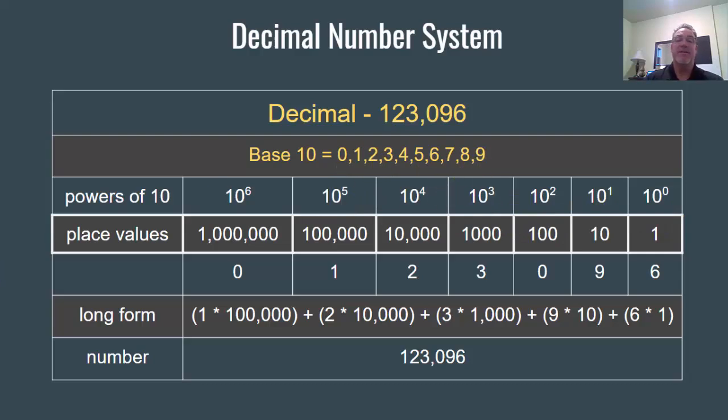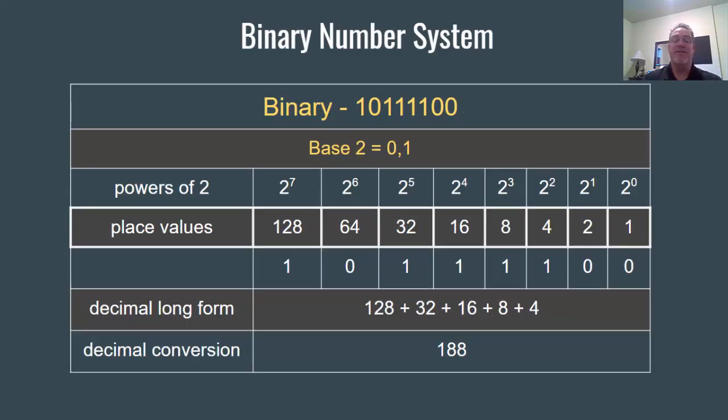Now let's compare this with the binary number system. The binary number system is similar, except instead of base 10 or based on powers of 10, it's based on powers of 2. It's also base 2, meaning there's only two numerals, 0 or 1.